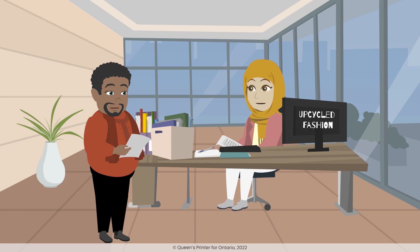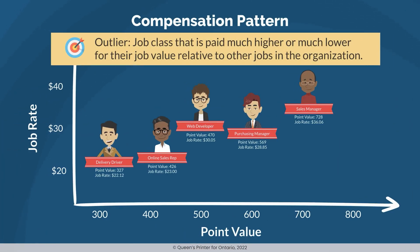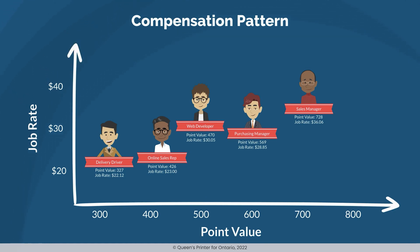All we have to do is select the male job classes we will be using. How do we choose representative male job classes? We can select any male job classes to represent our compensation practices, but should remove any outliers. An outlier is a job class that is paid much higher or much lower for their job value relative to other jobs in the organization, or a job class that is paid an anomalous rate. It looks like we don't have any outliers, so we can select all the male job classes as representative.